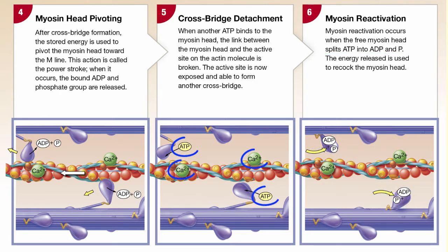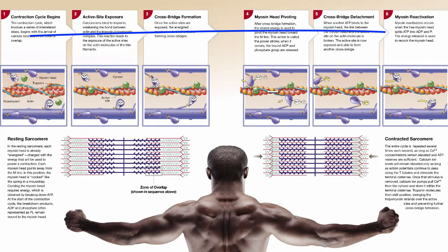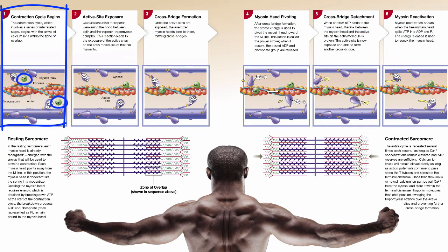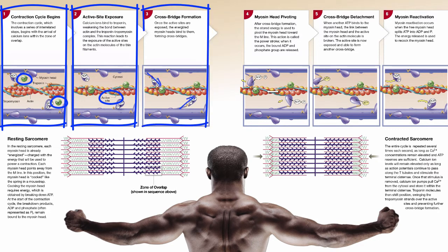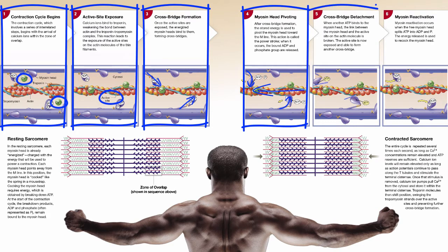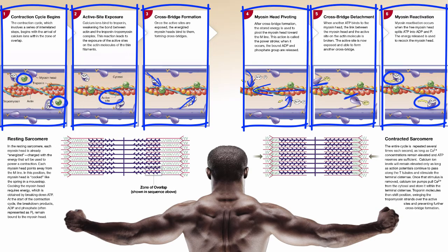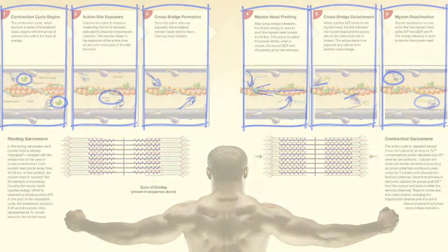As long as calcium ions and ATP are both present, the contraction cycle continues and can occur many times each second. In summary, the contraction cycle is a coordinated series of steps that begins with calcium ions binding to troponin and exposing the active sites of the actin filament. The binding of myosin to actin forms a cross bridge, followed by a power stroke and cross bridge detachment. The myosin head is reactivated by splitting ATP into ADP and phosphate.